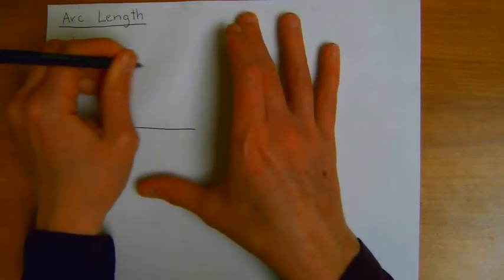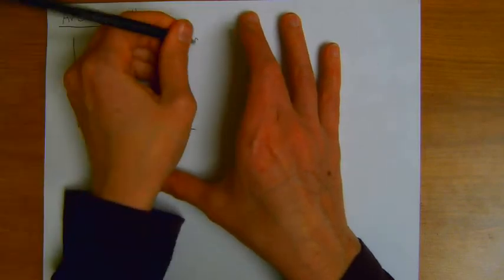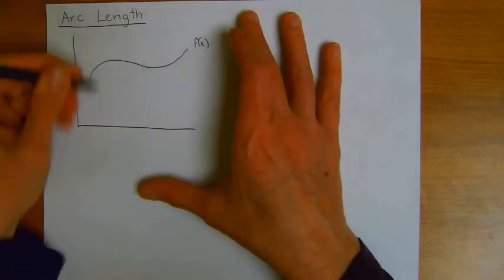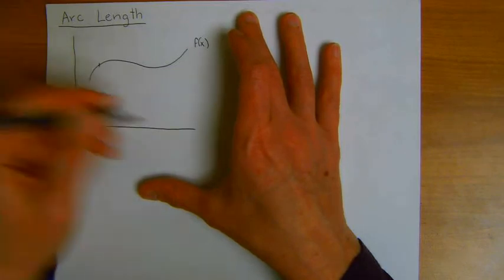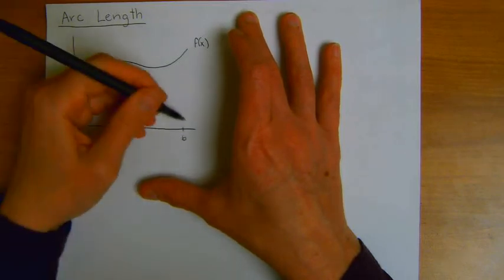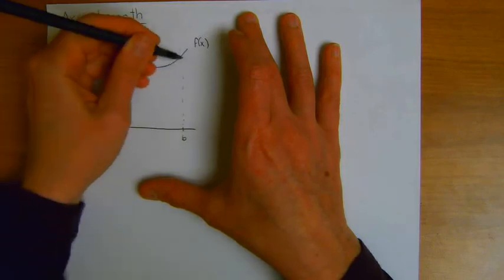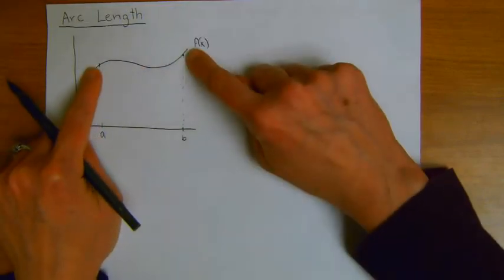So if we have some generic function that sort of looks like this, and we want to measure how long it is from a point A to over here, a point B, we have an intuitive idea of how long this segment is.